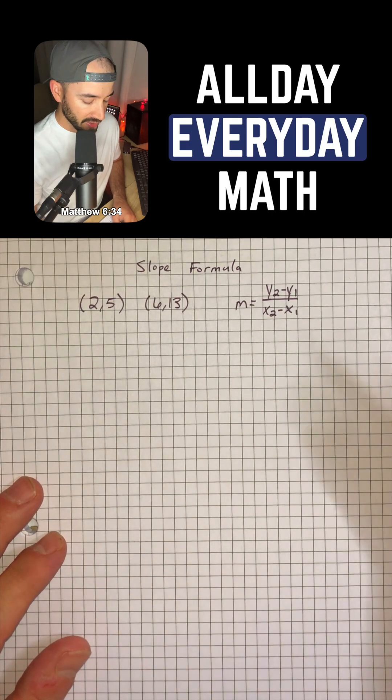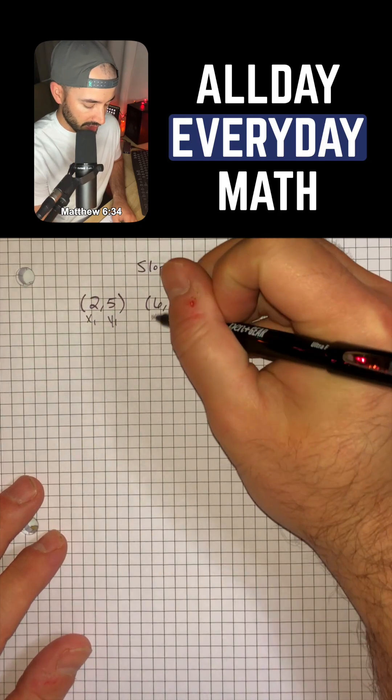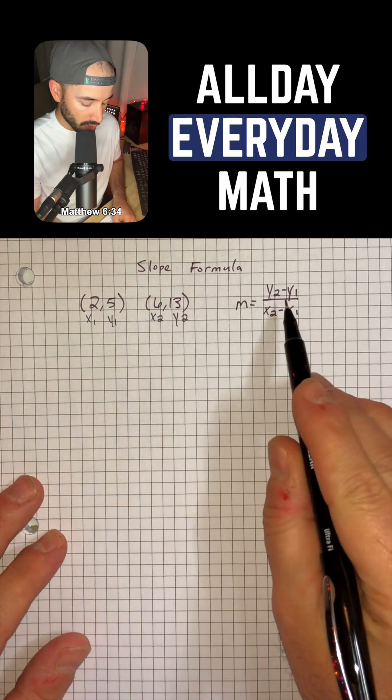So the way that I like to do it is I'm going to label my points x1, y1, x2, y2. And so now we can just plug these in to our formula.